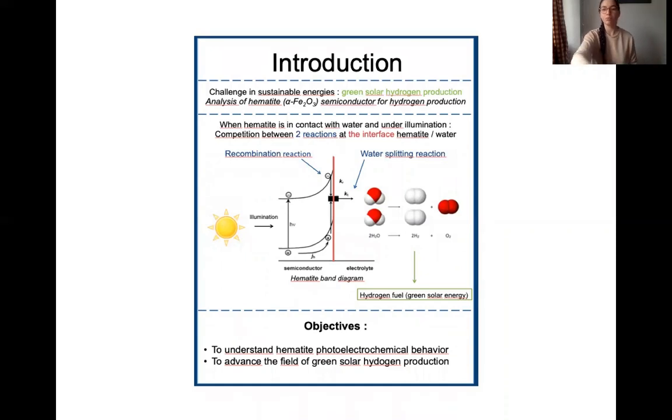We are focusing during our project on a semiconductor named hematite. It's an iron oxide. Why do we use this semiconductor? Because it's a semiconductor that is stable under illumination, that absorbs visible light, and also it has very interesting electrochemical properties.